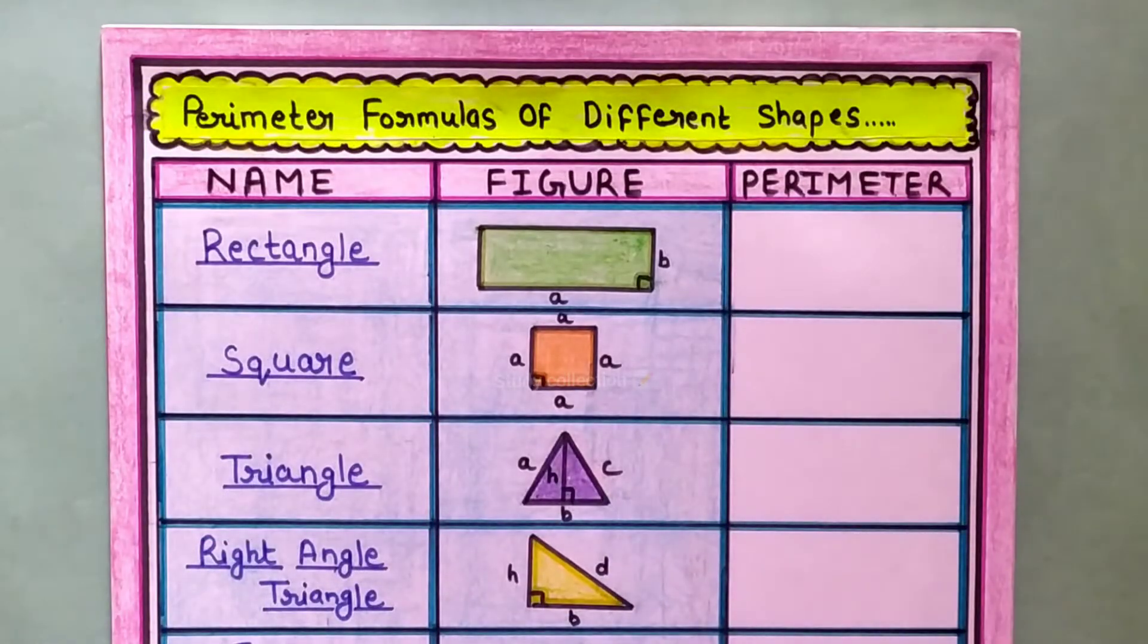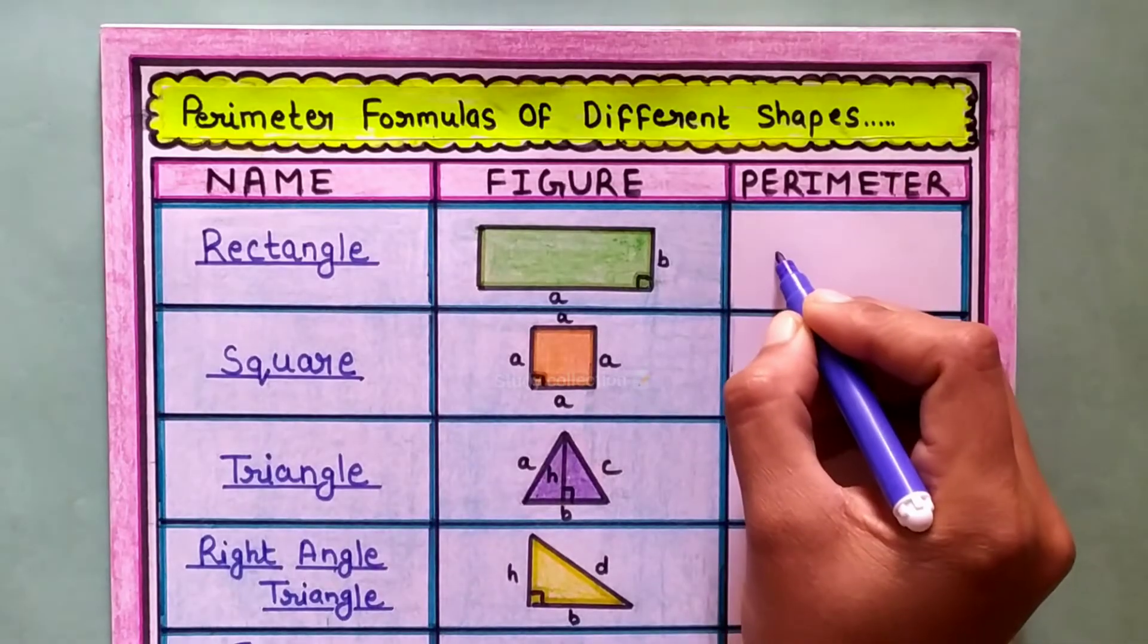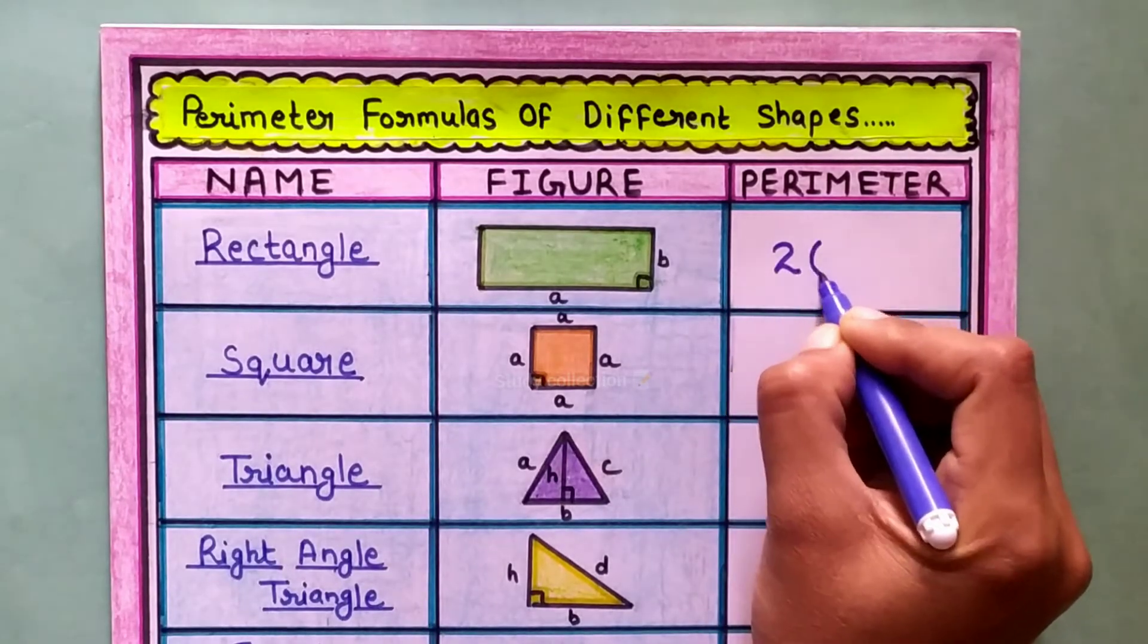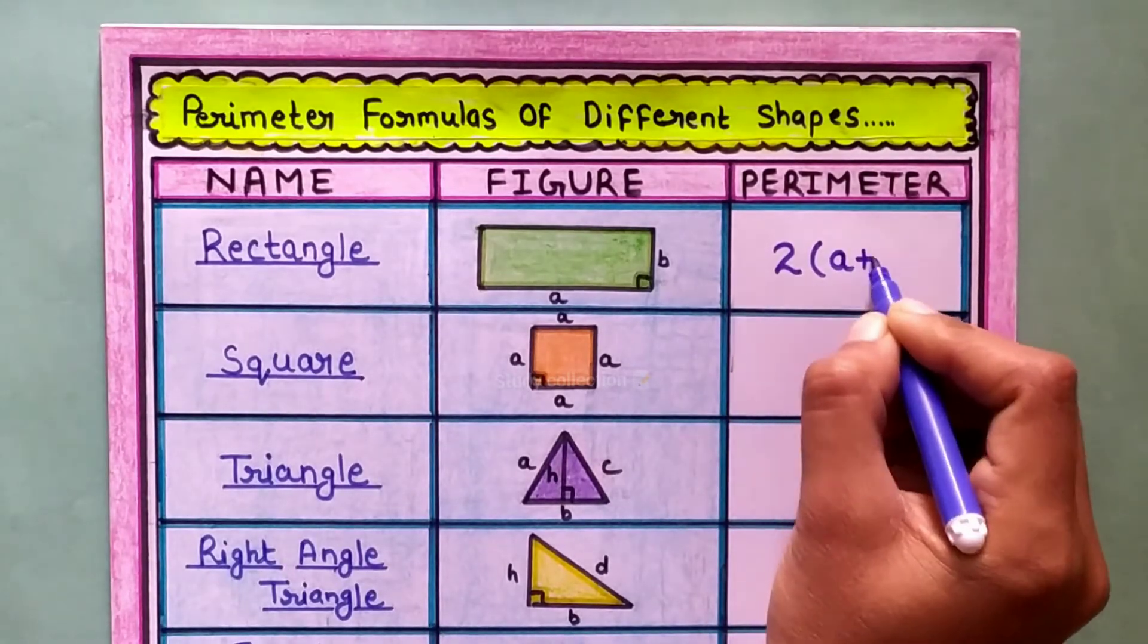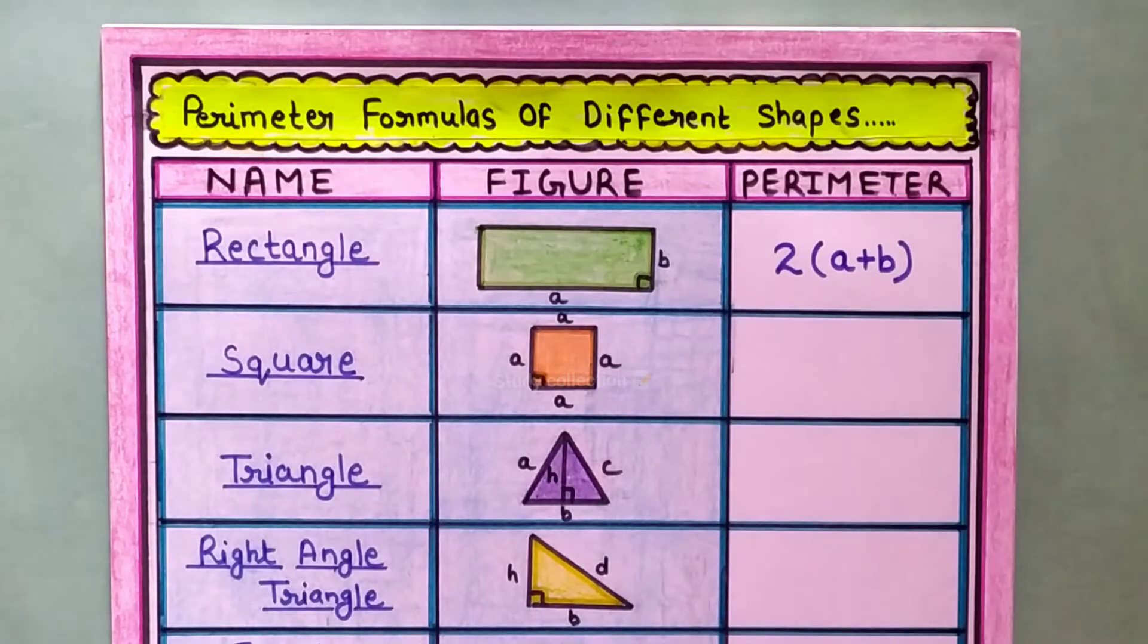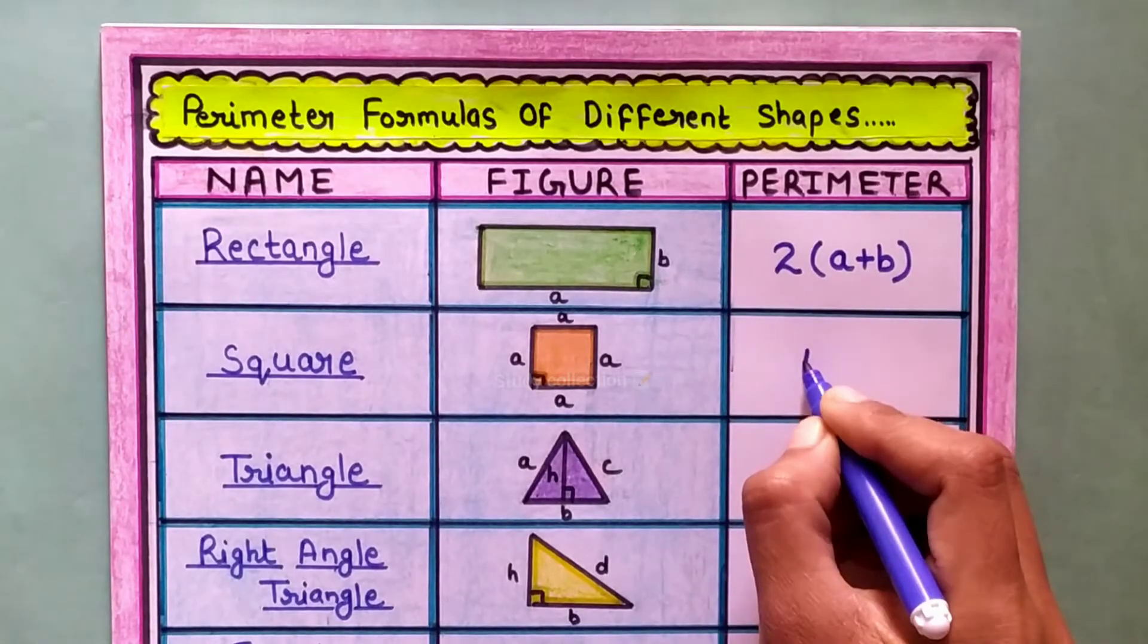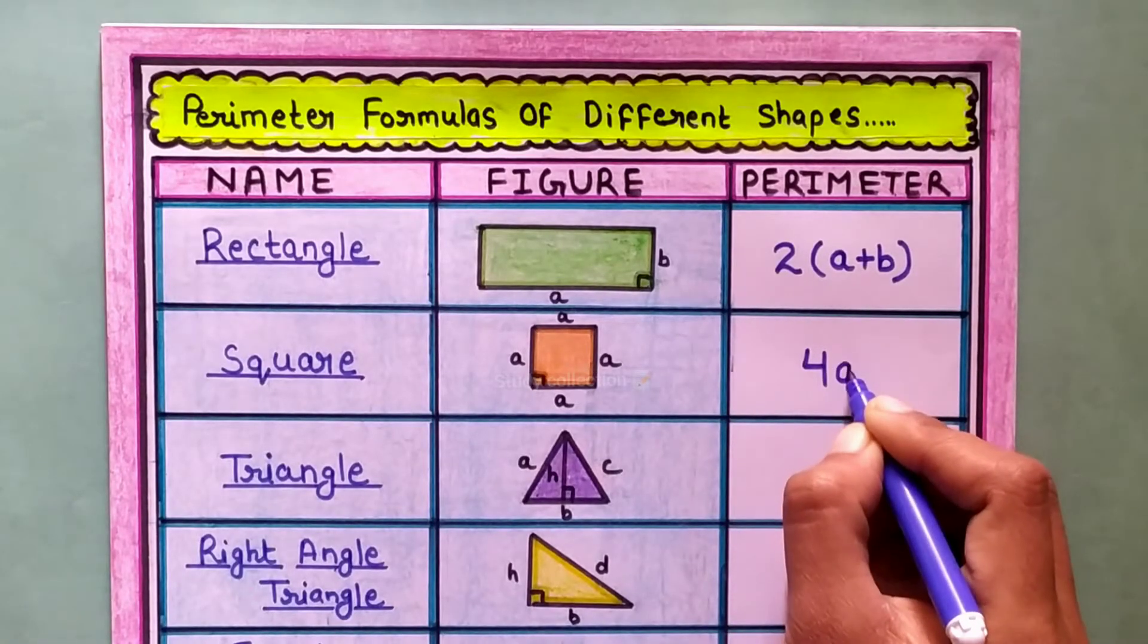So first shape is rectangle. The perimeter formula of a rectangle is 2 into A plus B. Next is square. The perimeter formula of a square is 4 into A.